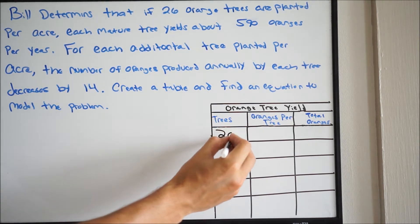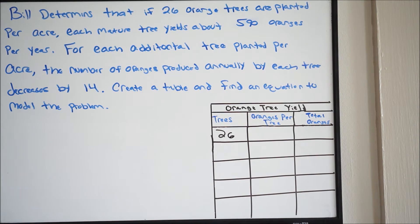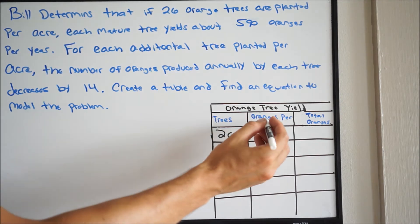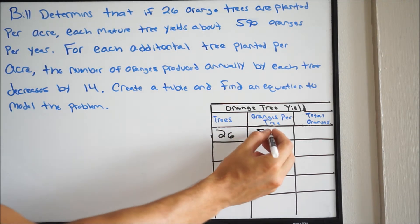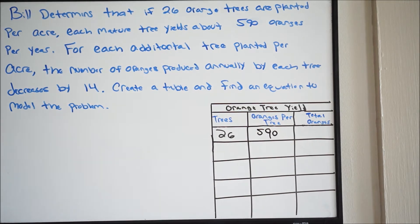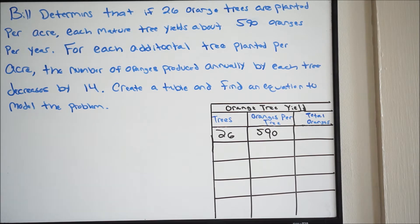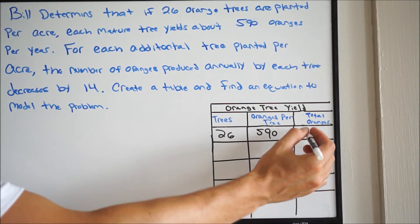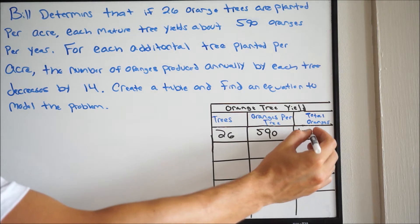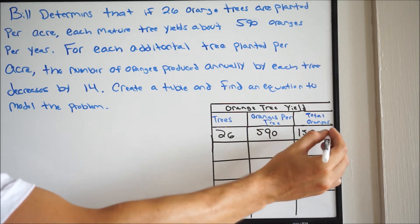So 26 trees — that's going to be 590 oranges per tree. And then total oranges, you're just going to simply multiply the two. So you have 26 times 590, and you'll get 15,340.